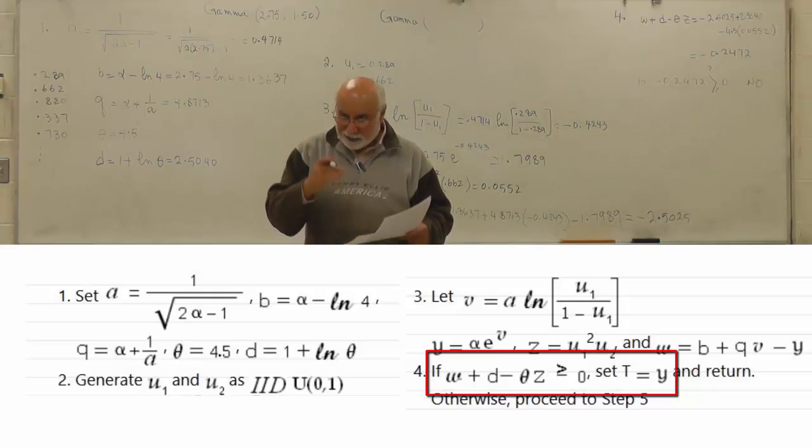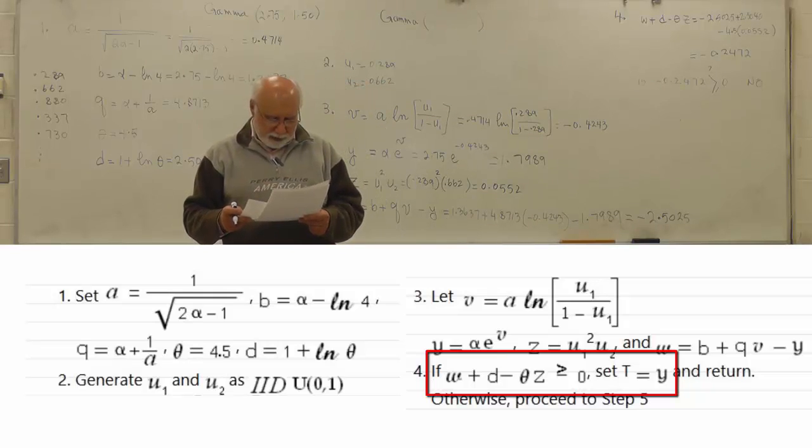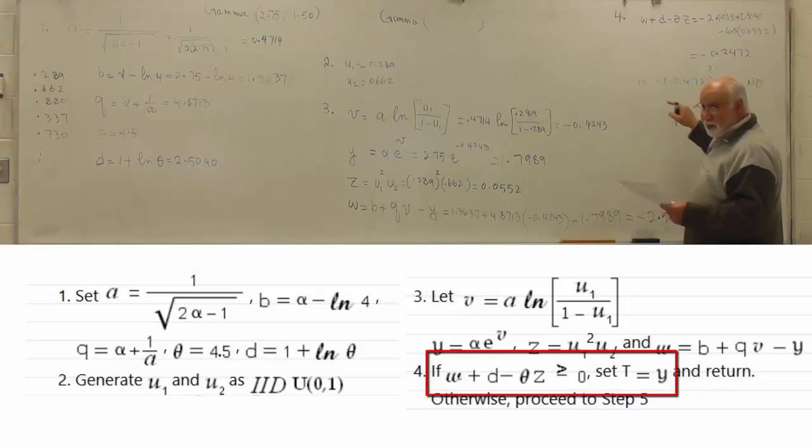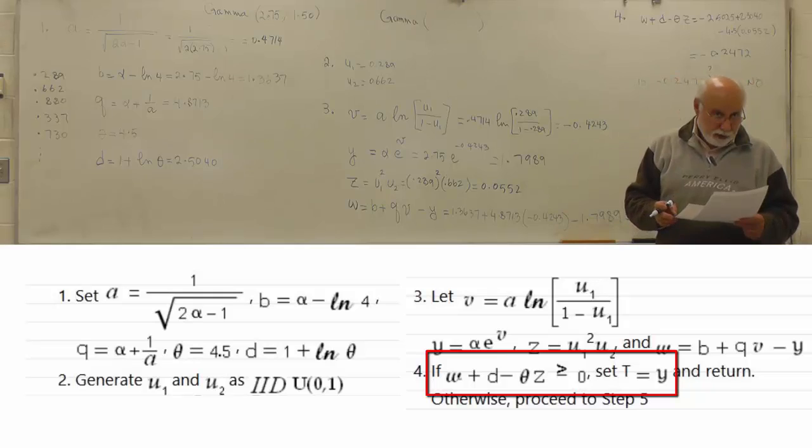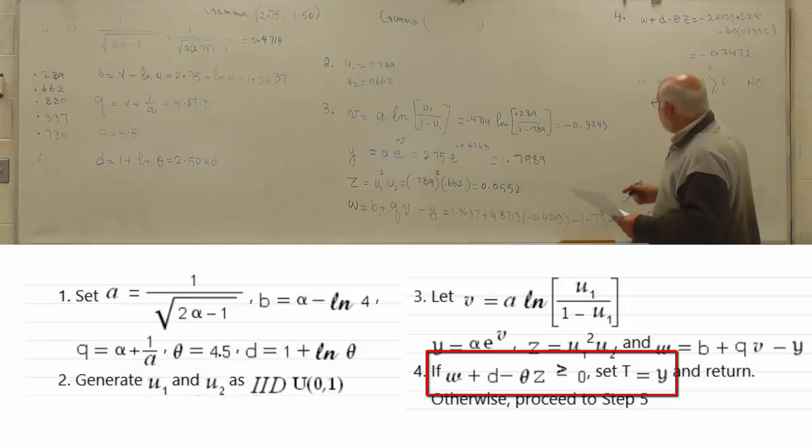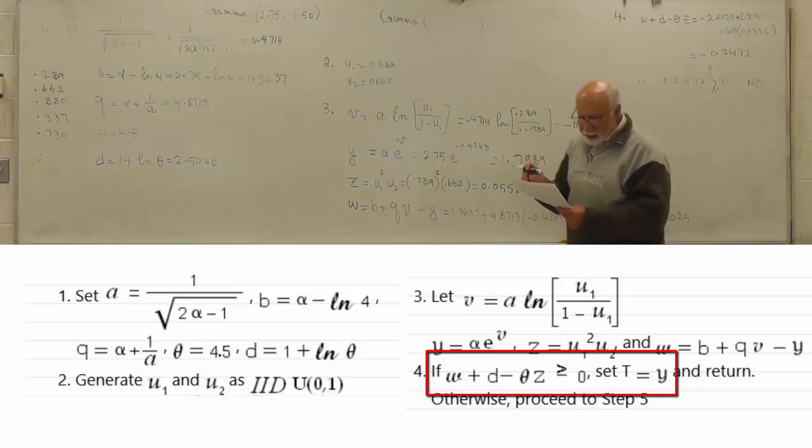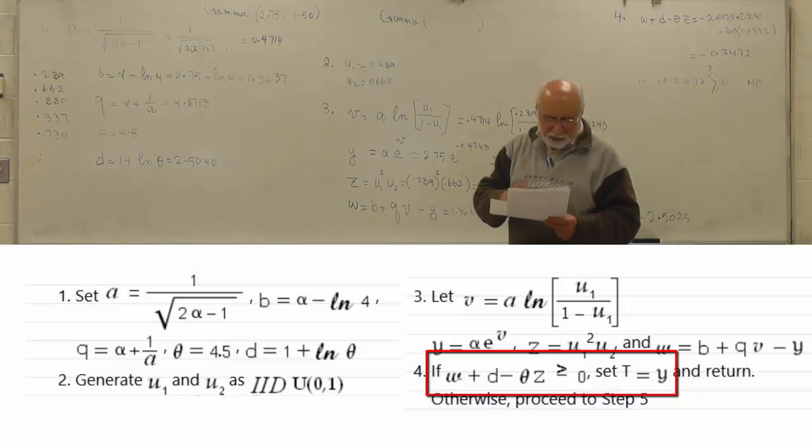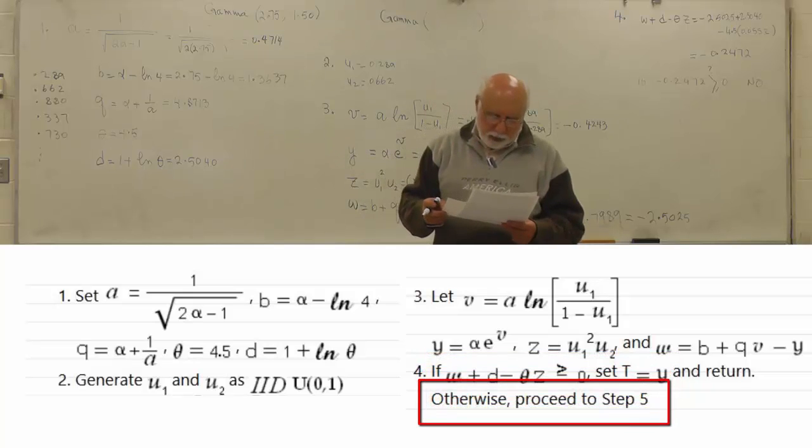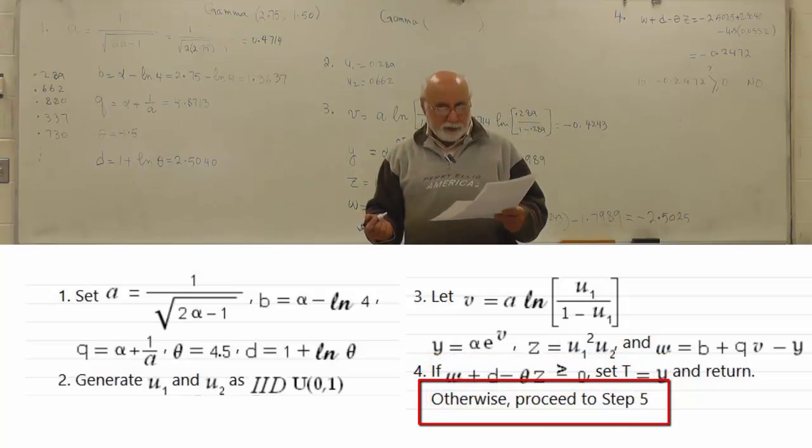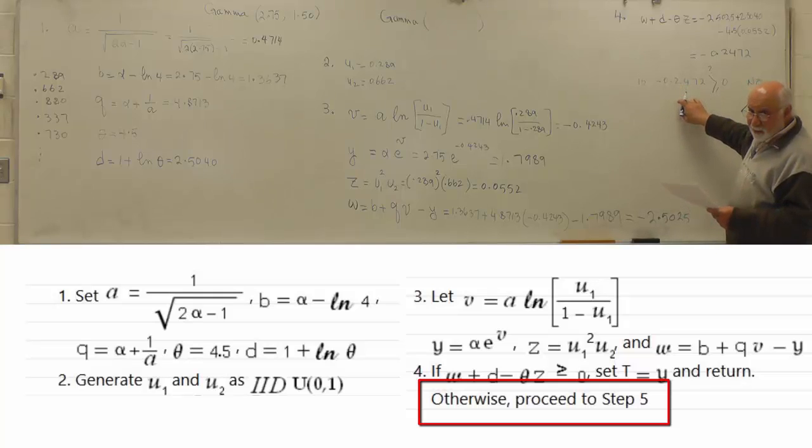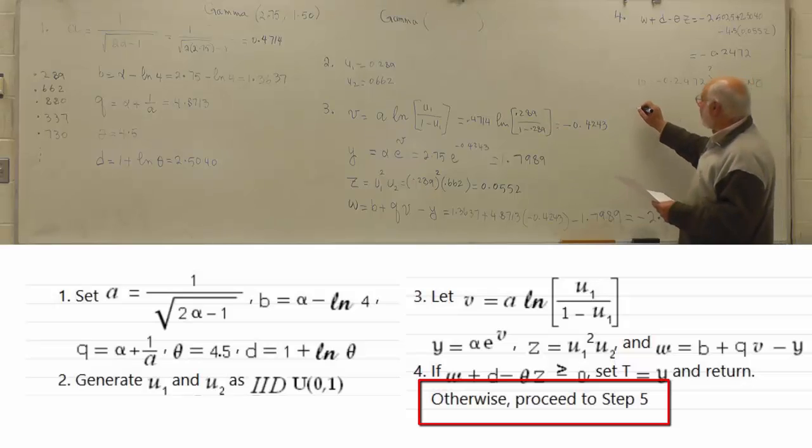If the answer was yes, you would have generated the number. But it is not. So this is step 4. This is not going to give you a number from that gamma distribution. In here it says if this is greater than 0, then set T equal Y and return, which means you have generated the number. Otherwise, proceed to step 5. So this is like the previous one. If this didn't work, maybe the next one will work. And that's where step 5 comes in.